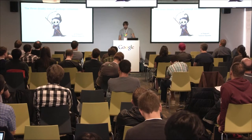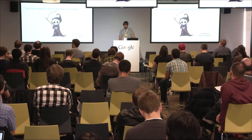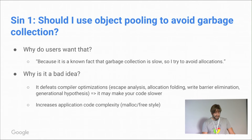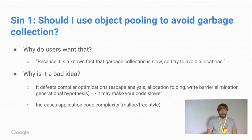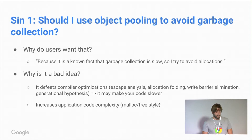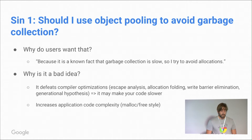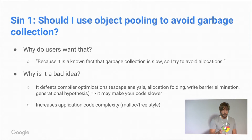Now let's move on to the three deadly sins about garbage collection — or frequent requests we get from users or developers. The first: should we use object pooling to avoid garbage collection? I think no, you shouldn't. The usual argument is that garbage collection is slow and will cause jank, so just avoid allocation. But it's actually a really bad idea — it defeats a bunch of optimizations we do, especially escape analysis, allocation folding, write barrier elimination, and it defeats the generational hypothesis. Long story short, it will make your code slower.